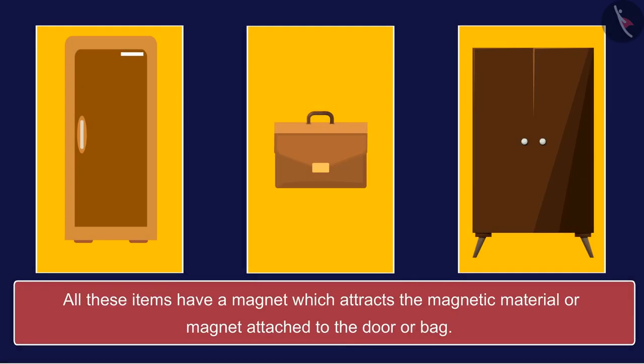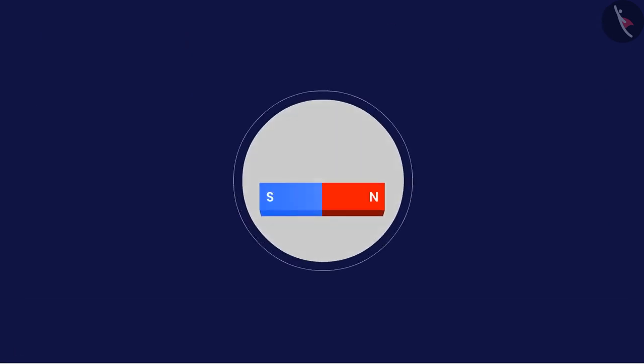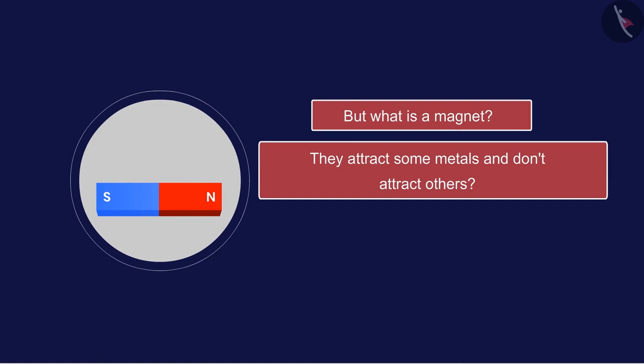The answer is the application of magnets. All these items have a magnet which attracts the magnetic material or magnet attached to the door or the bag. We have been seeing magnets since childhood, but what is a magnet? Why do they attract some particular metals?